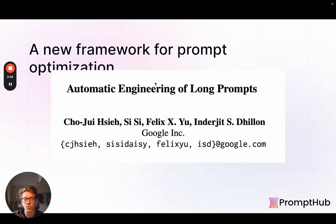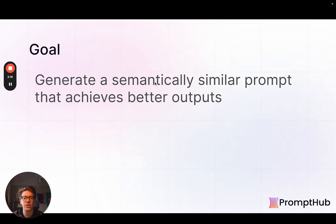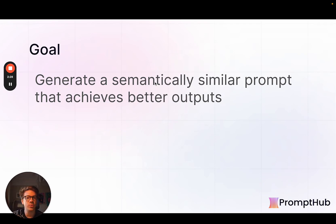The team from Google DeepMind came out with a paper at the end of November that looked specifically at a framework to optimize long prompts. The goal is to generate something that is semantically very similar to the original long prompt but achieves better outputs by whatever evaluation metric. Semantic similarity is very important because having something completely new and different from your original prompt isn't super helpful — you need something that feels the same, something you can iterate on in the future and can understand.